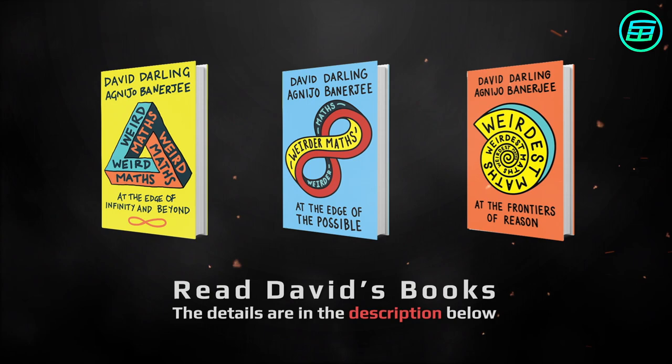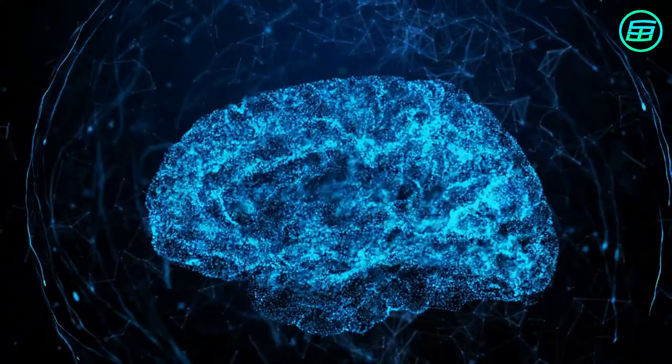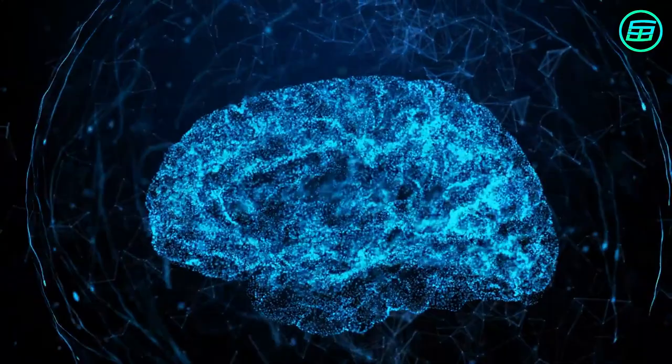Several theories have been put forward to explain the Stroop effect. According to one, the brain automatically understands the meaning of words because of our long-time habit of reading. But recognizing colors isn't an automatic process. Since automatic processes are faster, we can read the words faster than name the colors.